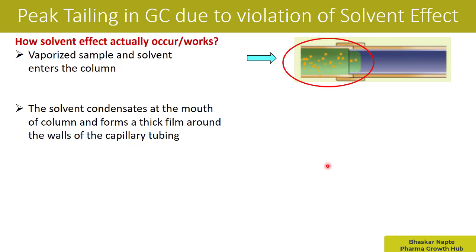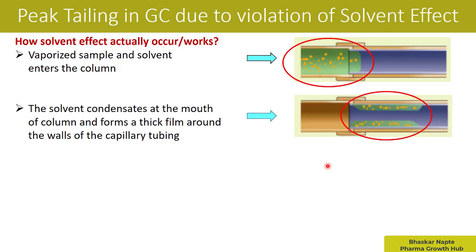The solvent condenses at the mouth of the column and forms a thick film around the walls of the capillary tubing. Whatever solvent is in vapor form, as it reaches the column, the column temperature is not sufficient to maintain the solvent in vaporized form. Because of this lower column temperature, the solvent starts condensing at the very beginning of the column — it condenses along with the analytes and forms a thick film around the wall of the capillary tubing, as shown in the diagram.